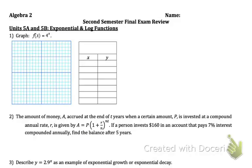Problem 1 is asking us to graph f(x) equals 4 to the x. The first thing you're going to need to do is draw your x and y axis. And then you're going to fill out your table. We're going to plug in for x just numbers negative 2, negative 1, 0, 1, 2.